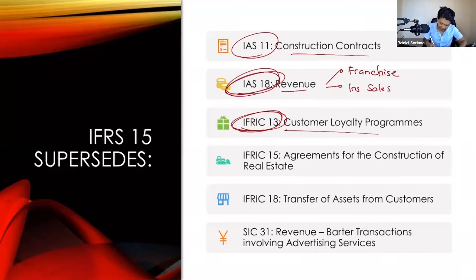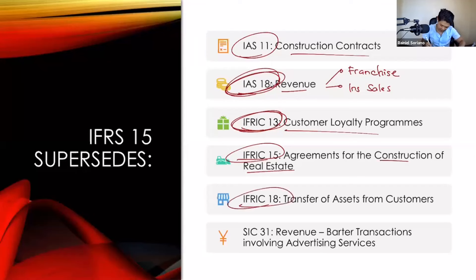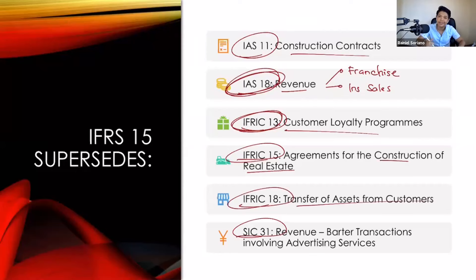Next is IFRIC number 15 — agreements for the construction of real estate — and we will also use IFRS 15 for that. Next is IFRIC 18, the transfer of assets from customers. And last is SIC number 31, which covers revenue from barter transactions involving advertising services. Starting January 1, 2018, all these standards and interpretations are no longer valid.